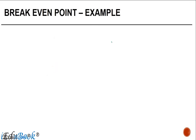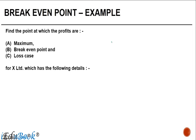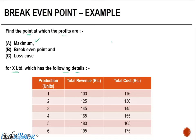Let's look at an example of break even point. The question asks us to find: (a) the point at which profits are maximum, (b) the break even point, and (c) the loss case for X Limited, which has the following details. We are given the number of units produced, the total revenue, and the total cost. Since profits are total revenue minus total cost, let's add a profit column.